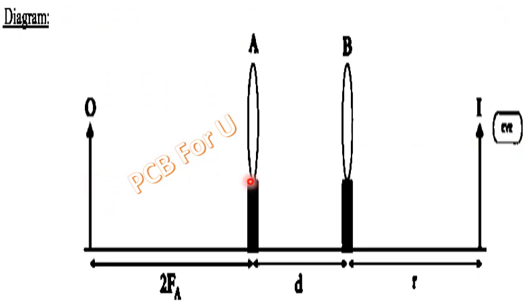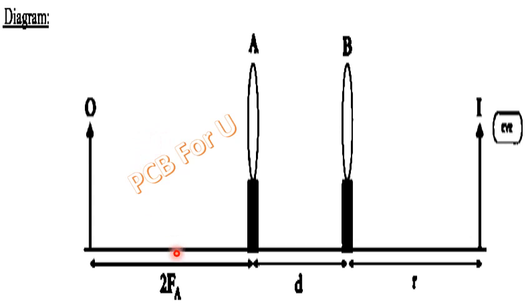Now we have the positions of A and B — this is the object and image. The object distance is the 2FA distance. The focal length of the A distance is the 2FA distance.